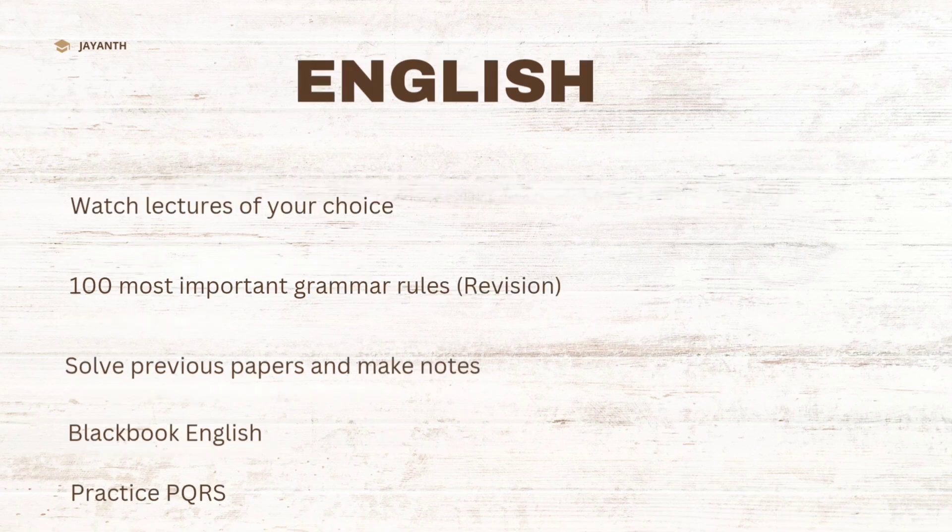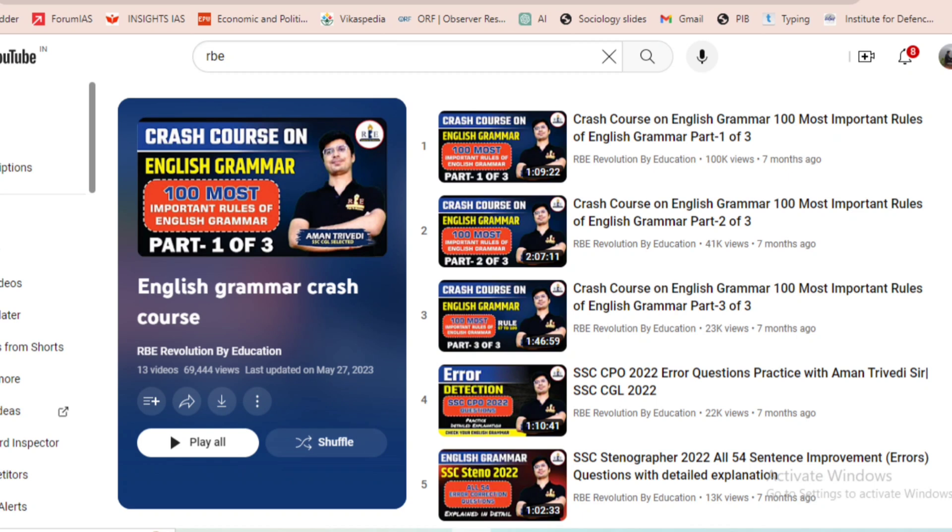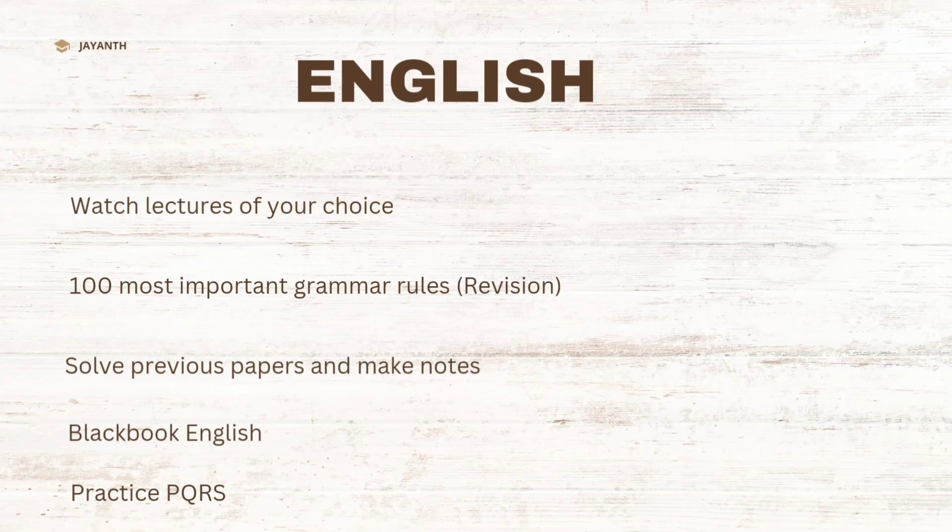Moving on to the next topic, that is English. First of all, watch lectures of your choice. For revision, you can watch 100 most important grammar rules in RBE YouTube channel. I will leave the link in the description. Or Blackbook to read idioms, one word substitutions, synonyms and antonyms. It's vast and quite difficult to complete in this short period of time, but you should at least try to complete the most repeated questions. My junior completed it and got 135 by 135 in final tier 2.